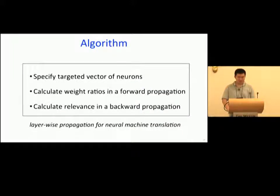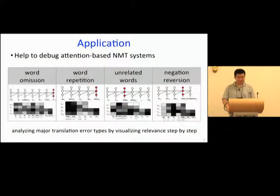This is the algorithm of layer-wise relevance propagation for neural machine translation. First, specify targeted vector or neurons. Then, calculate weight ratios in a forward propagation. Finally, calculate relevance in a backward propagation. Our approach can be used to debug attention-based NMT systems.